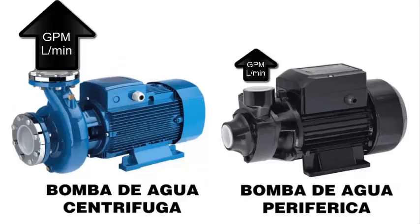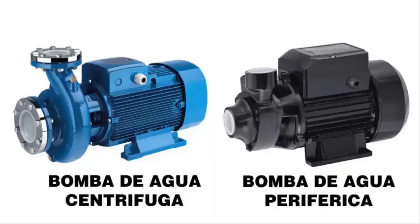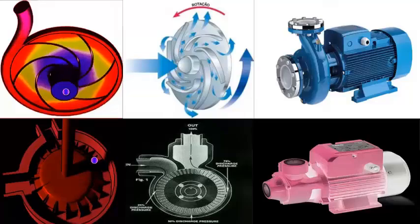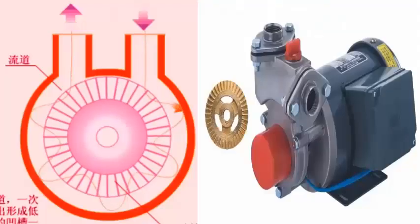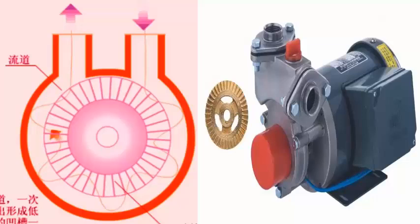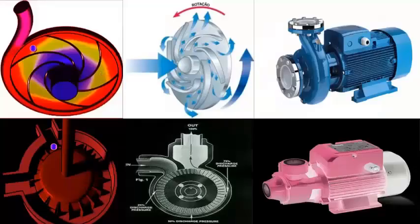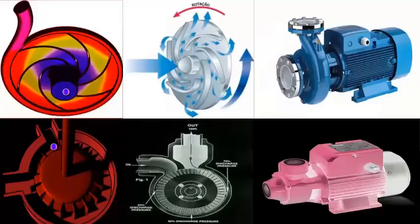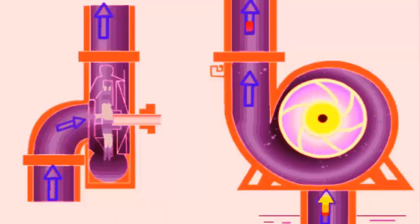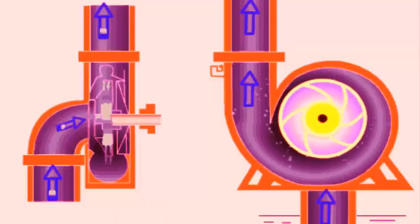2. Fluid Path. In peripheral pumps, the fluid follows a longer and more turbulent path due to recirculation, increasing accumulated pressure. On the other hand, centrifugal pumps are designed to move the fluid quickly toward the outlet, making them ideal for applications requiring higher flow rates without recirculation.